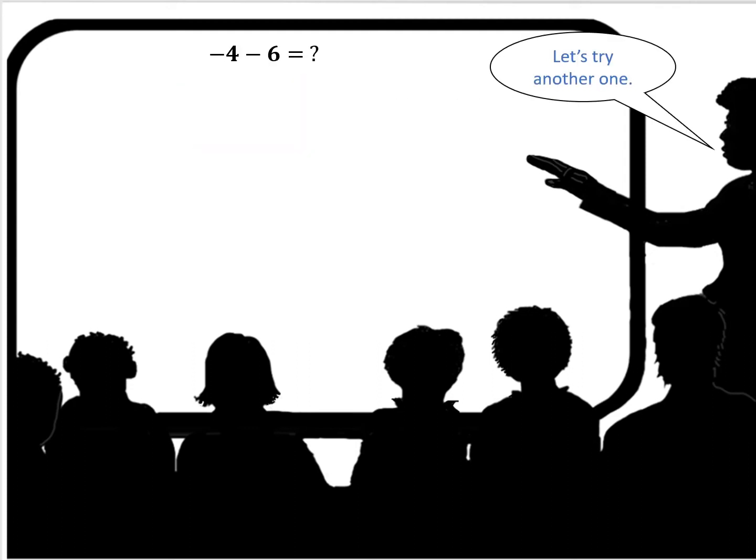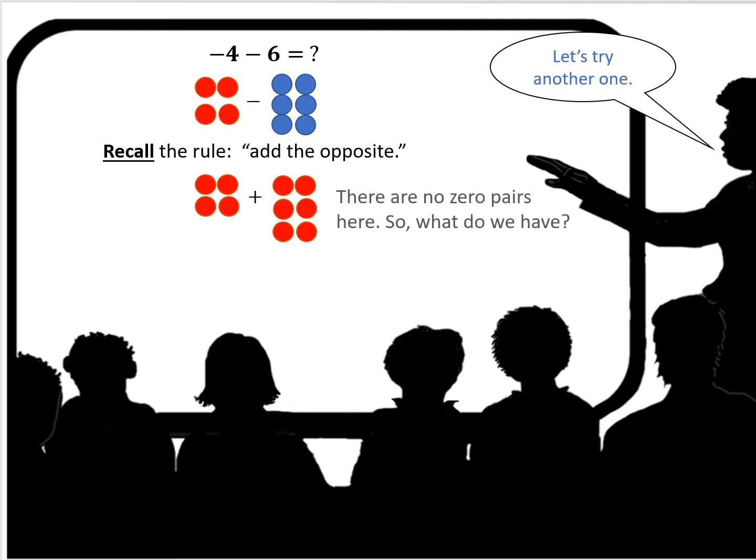Let's try another one. What is negative 4 minus 6? Well I've got the negative 4 chips minus and I have the positive 6 chips. But we have to remember the rule about adding the opposite. Remember when you subtract you add the opposite. So I keep the negative 4 and then I add what is the opposite of positive 6? Negative 6.